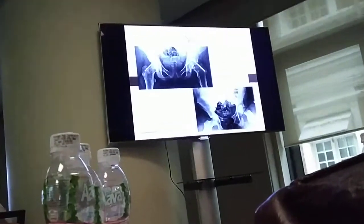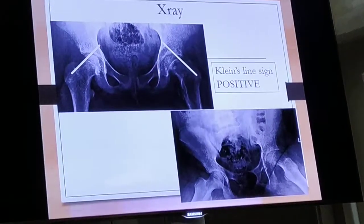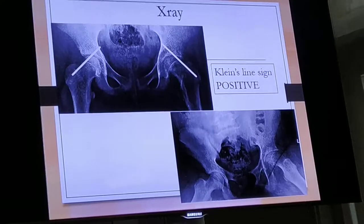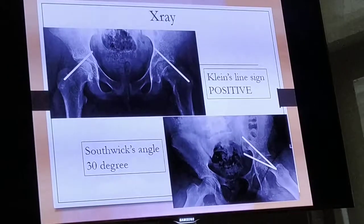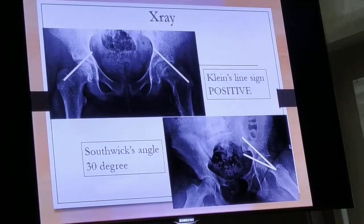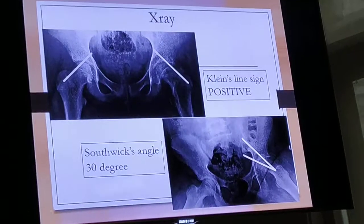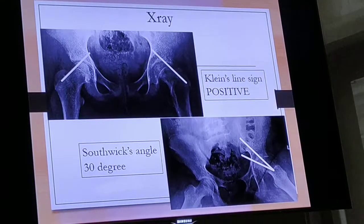The neck should intersect the epiphysis on the normal side. On the left side, you can see that it is not intersected, and there is mild slippage of the proximal femoral epiphysis with an angle of about 30 degrees.